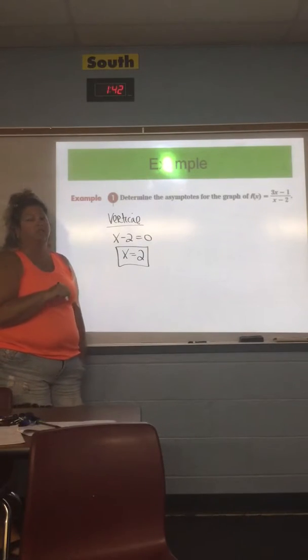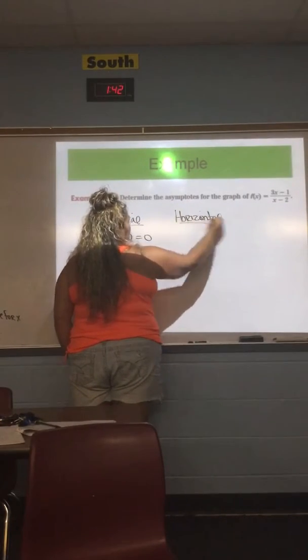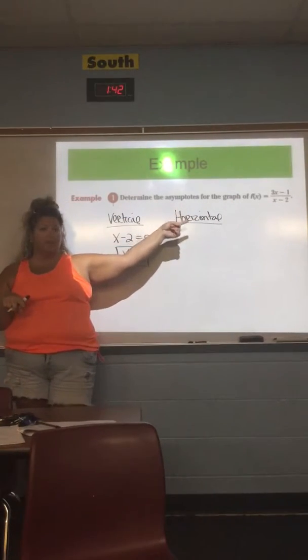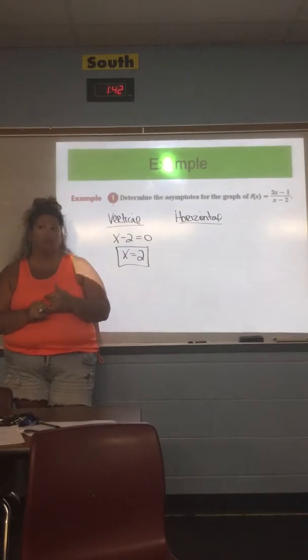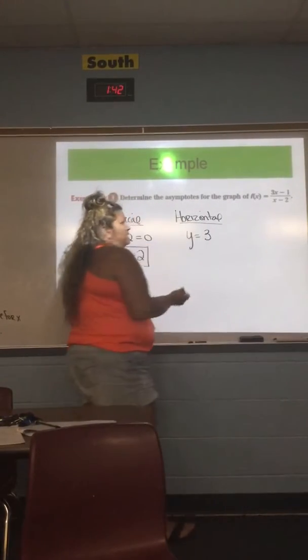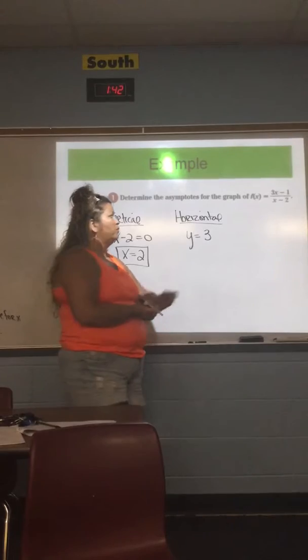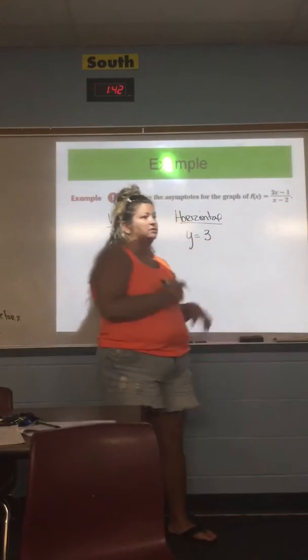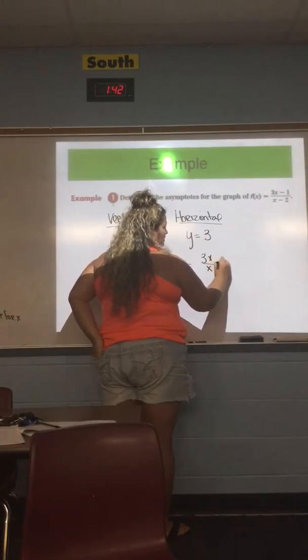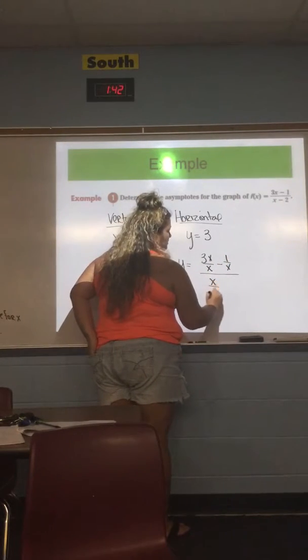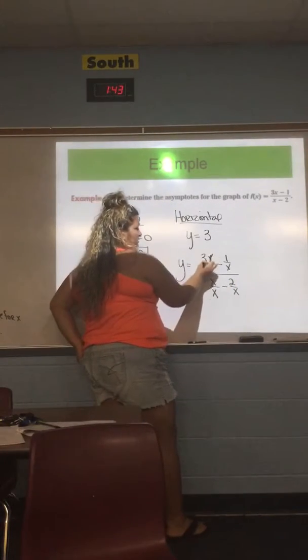The next one that I need to do is horizontal. Now, if we use the method that we were told in Algebra 2, are these bottom-heavy, top-heavy, or are they equal? They're equal. So what should the asymptote be? 3 over 1, which would just be y equals 3. They show us another method. We can divide everything by the highest power of the variable. What's the highest power on this variable? 1. We can also do this.